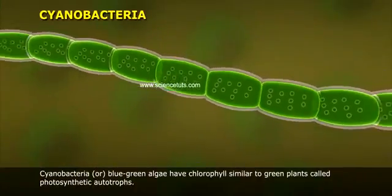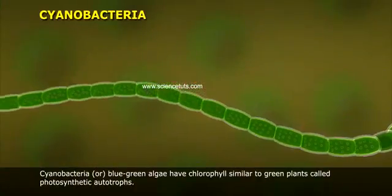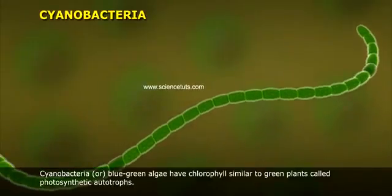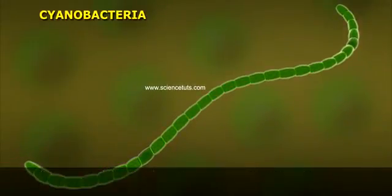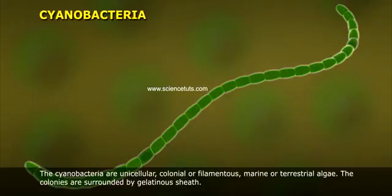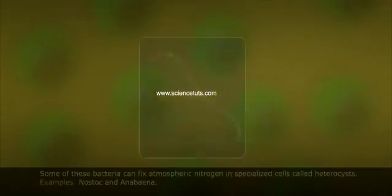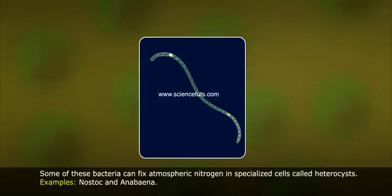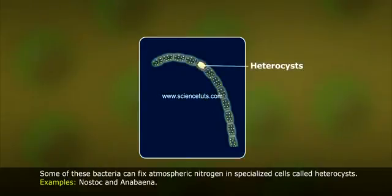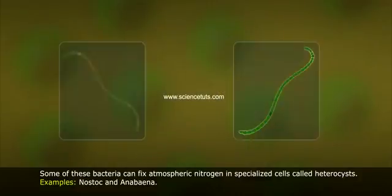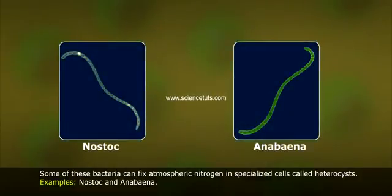Cyanobacteria, or blue-green algae, have chlorophyll similar to green plants and are called photosynthetic autotrophs. Cyanobacteria are unicellular, colonial, or filamentous marine or terrestrial algae. Their colonies are surrounded by gelatinous sheaths. Some of these bacteria can fix atmospheric nitrogen in specialized cells called heterocysts — for example, Nostoc and Anabaena.